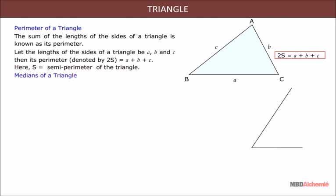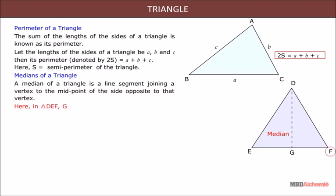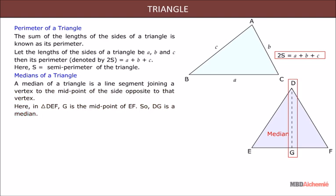Medians of a triangle: a median of a triangle is a line segment joining a vertex to the midpoint of the side opposite to that vertex. Here, in triangle DEF, G is the midpoint of EF, so DG is a median.